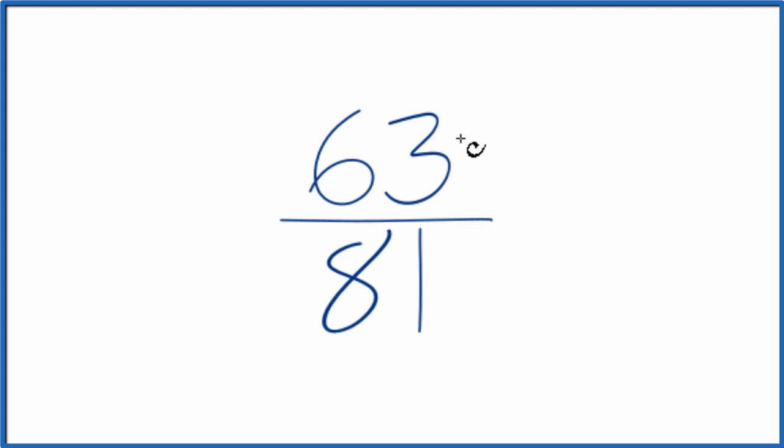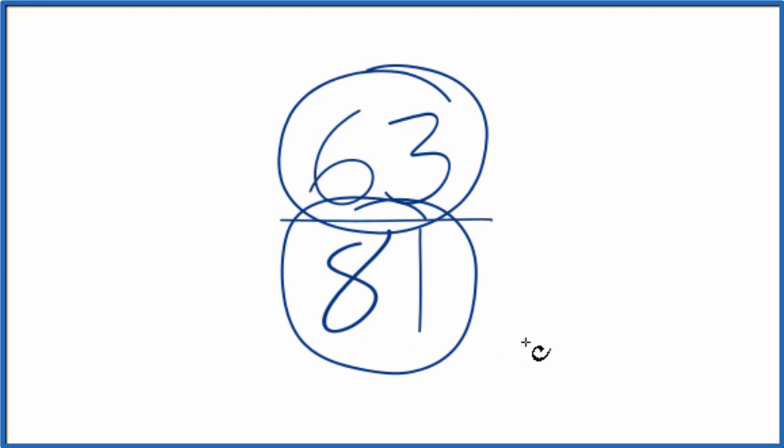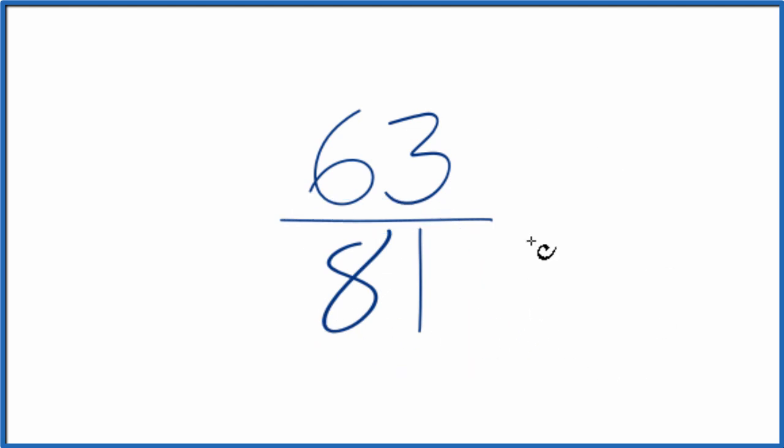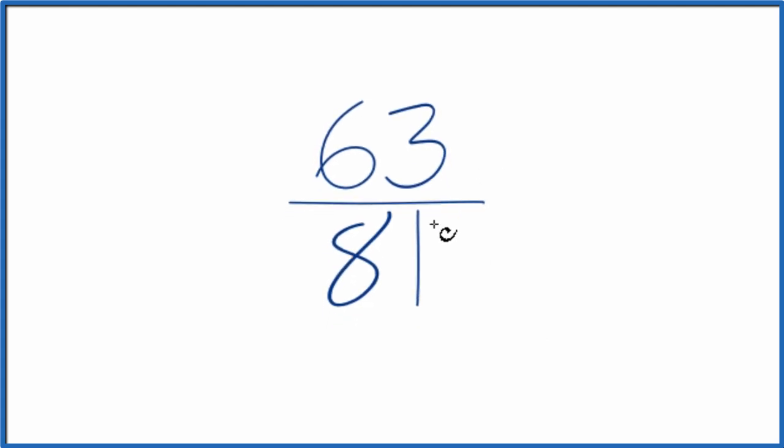We need to find a common factor, something that goes into 63 and 81 evenly. We're actually looking for the greatest common factor, so these are the factors for 63 and 81.